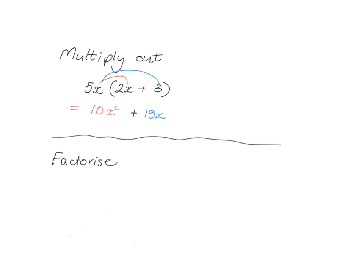Today we're going to be looking at factorizing. Now factorizing is just the reverse of multiplying out. So you've done a lot of multiplying out using the distributive law. Multiply 5x times 2x plus 3, you've got to do 5x times 2x is 10x squared, 5x times 3 is 15x, so you get that 5x times 2x plus 3 is exactly the same as 10x squared plus 15x.